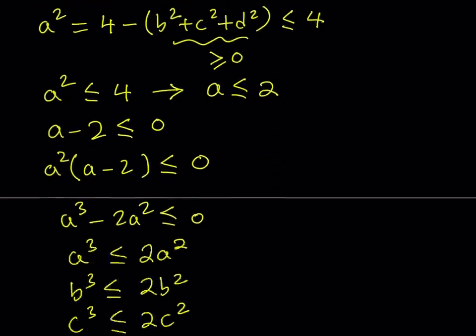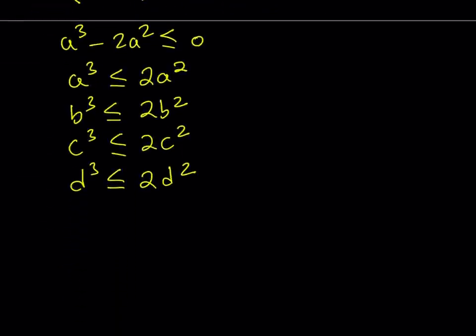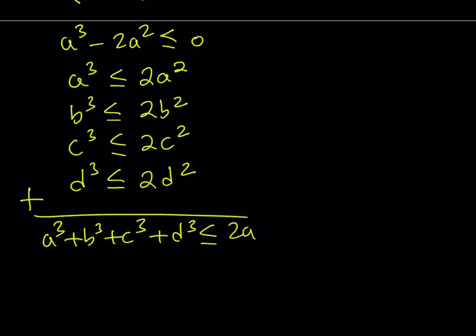Let's go ahead and do that. We can add inequalities. They're all in the same direction. So we get a cubed plus b cubed plus c cubed plus d cubed is less than or equal to 2a squared plus 2b squared plus 2c squared plus 2d squared.